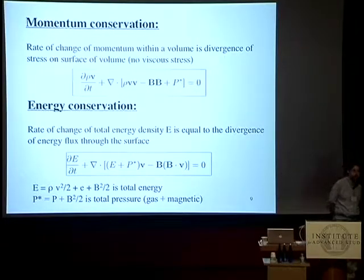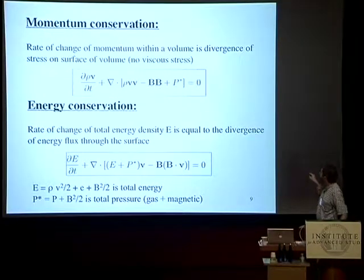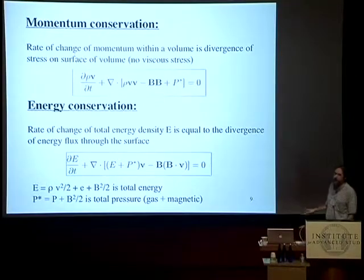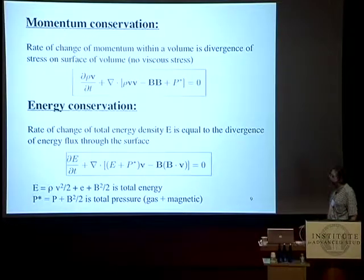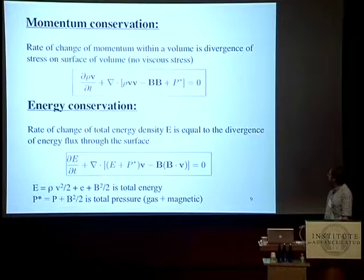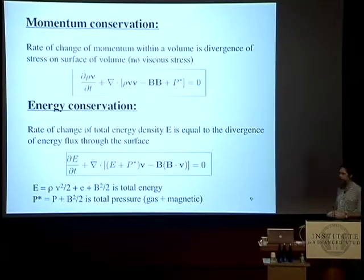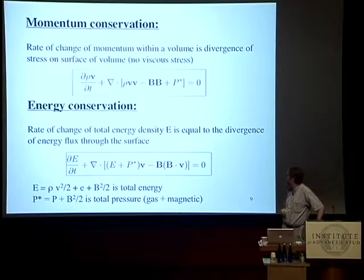In addition to mass conservation, we have momentum conservation. The time rate of change of the momentum density in the volume equals the divergence of the momentum flux — the stress on the surface. There are several components: the Reynolds stress (momentum transport by velocity fluctuations), the Maxwell stress associated with the magnetic field (the BB tensor), and part buried in the definition of total pressure P*, which is gas pressure plus magnetic pressure. The pressure itself also represents a momentum flux. So the stresses on the surface produce changes in momentum density — that's the second conservation law.